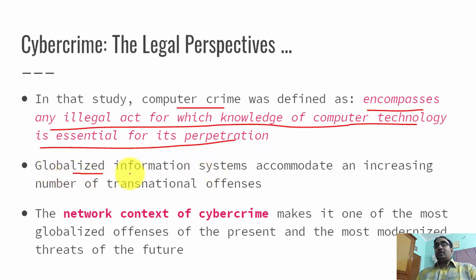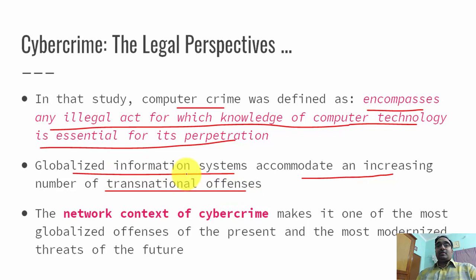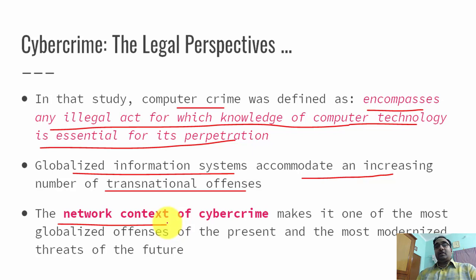If you consider globalized information systems, they can accommodate a number of transnational offenses — that is, offenses across different nations. Examples of globalized information systems include Facebook, Instagram, Gmail, Dropbox and similar platforms. Since they are used by people across the world, they can be considered globalized information systems. The network aspect gives rise to a number of globalized offenses, as anyone sitting anywhere in the world can access the network and commit offenses.